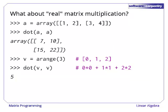Alright, so what about real matrix multiplication? NumPy provides a function called dot that does this and other useful things. Dot of two matrices is their mathematical matrix product. Dot of two vectors is their dot product, i.e. the sum of the products of their elements.